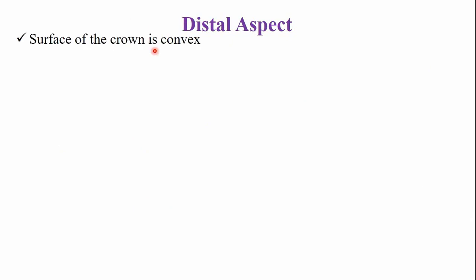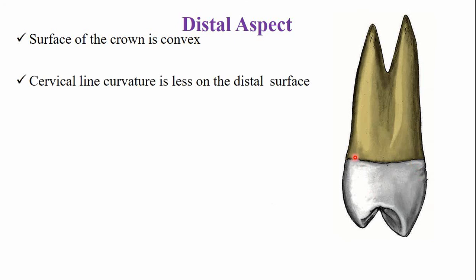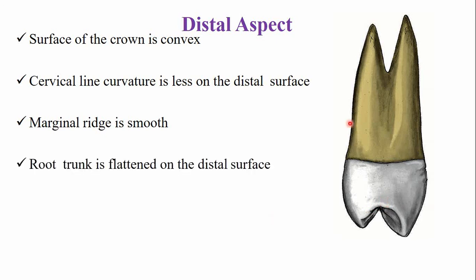From the distal aspect, the crown surface is convex with no developmental depression below the contact area, unlike the mesial surface. The cervical line curvature is less, and the distal marginal ridge is smooth with no developmental depression. The root trunk is flattened with no developmental depression, and both the crown and root surface are smooth.